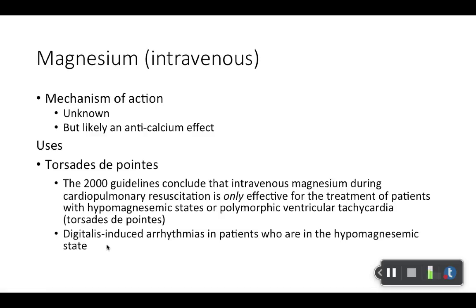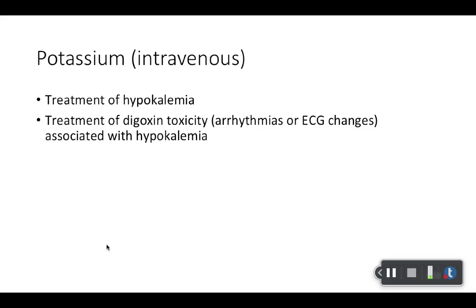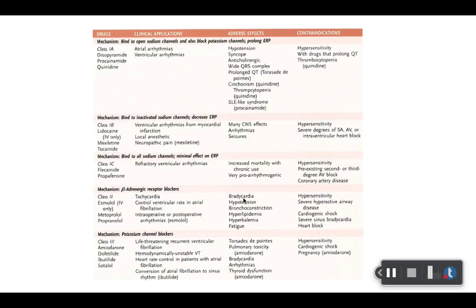IV magnesium — as far as mechanism of action, they don't really know; it's not fully elucidated. It can be used to help treat torsades de pointes and also used with digitalis-induced or dig toxicity arrhythmias. It's also used for people who have hypomagnesemia. And note that IV potassium can help treat hypokalemia — it also helps with dig toxicity when the patient has hypokalemia. We'll talk about dig toxicity more in another presentation.